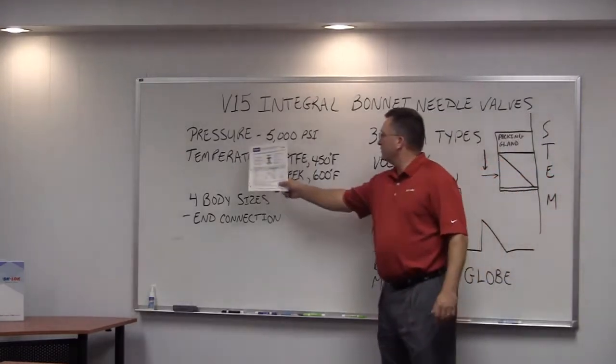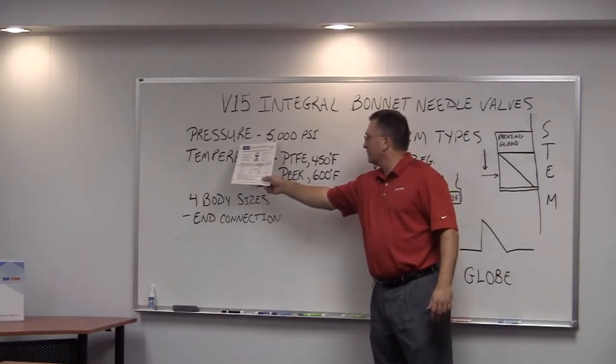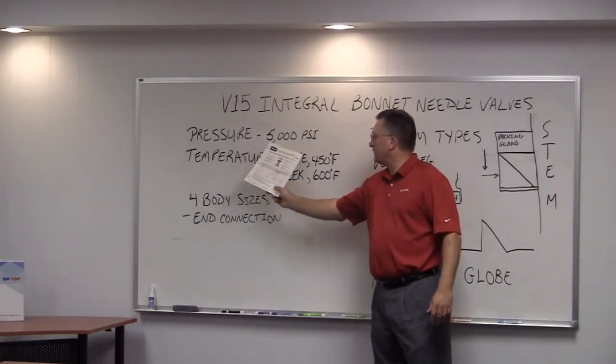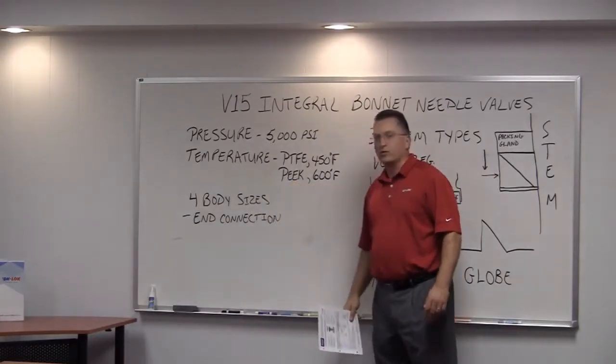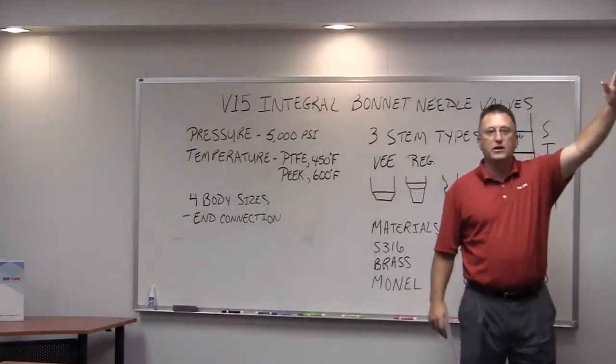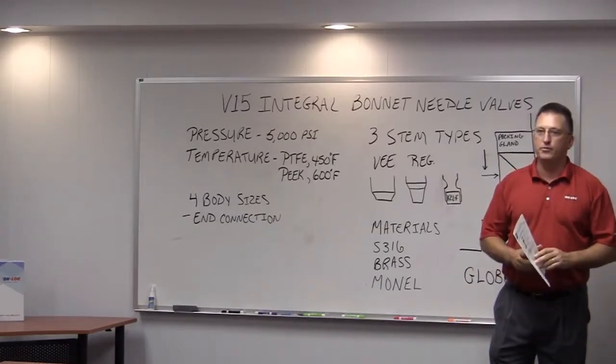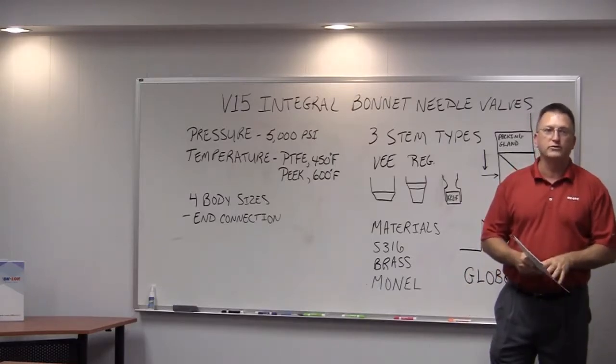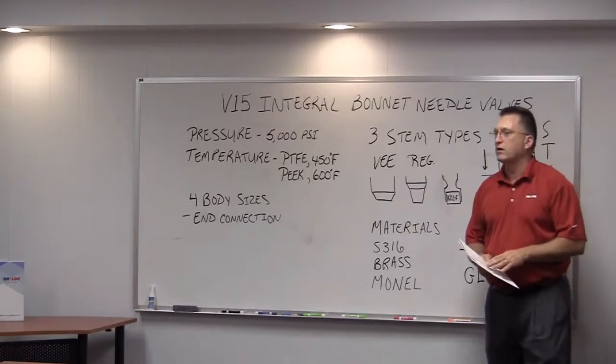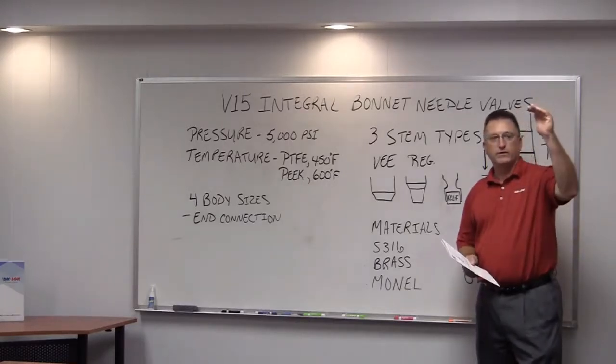In stainless steel, the ambient working pressure of the V15 is 5,000 PSI. And as everyone understands, as temperature increases, pressure capability drops. And we have a temperature pressure chart in the literature that shows you what your pressure capabilities are up to 450 degrees Fahrenheit.